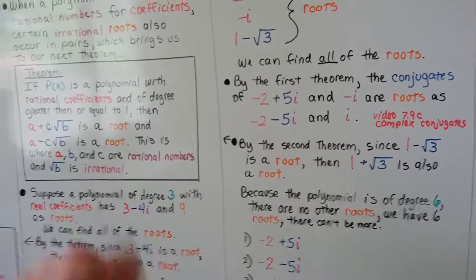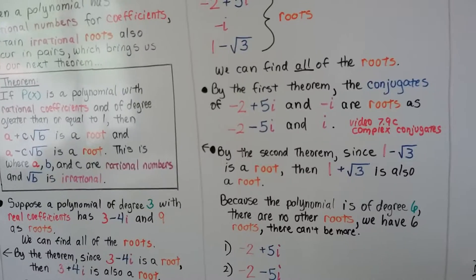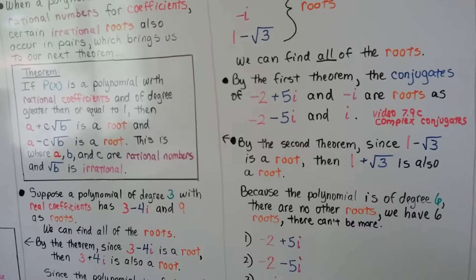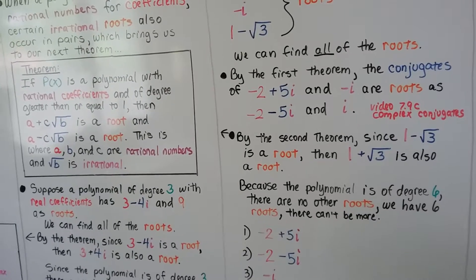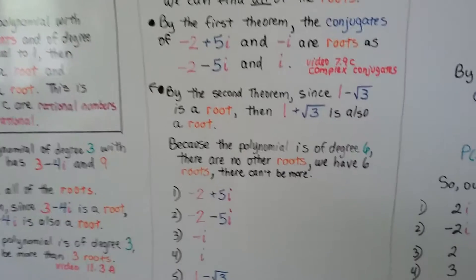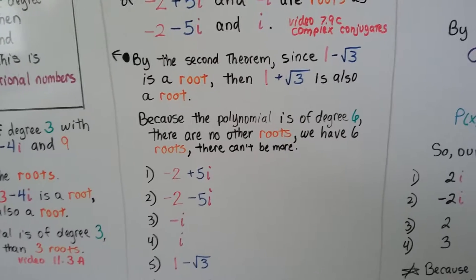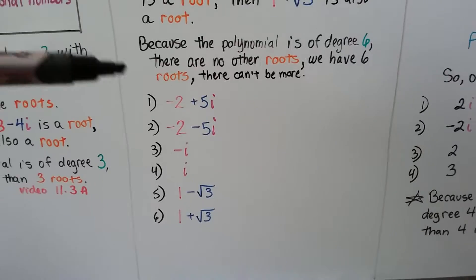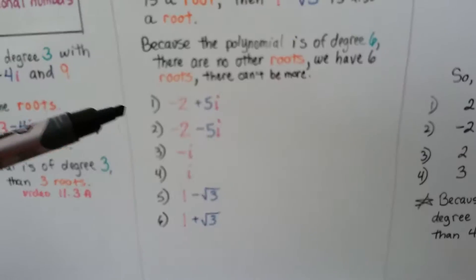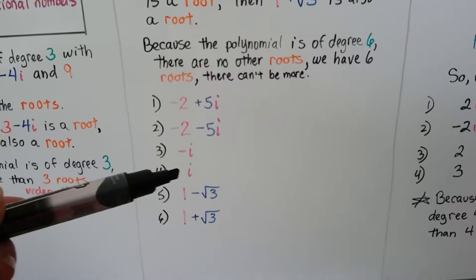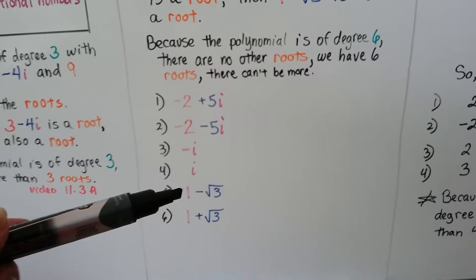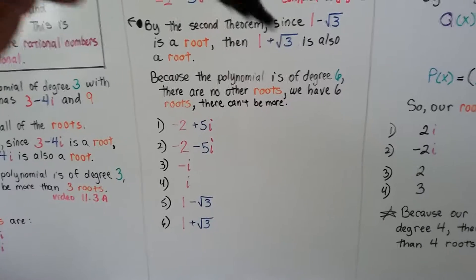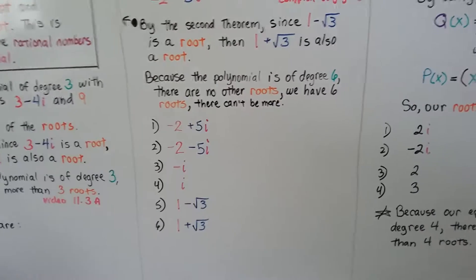Now by this second theorem, since 1 minus the square root of 3 is a root, then 1 plus the square root of 3 is also a root. And because the polynomial is of degree 6, there's no other roots. We have 6 roots. There can't be more. So here they are: negative 2 plus 5i, negative 2 minus 5i, negative i, i, 1 minus the square root of 3, and 1 plus the square root of 3. There's our 6. If it's of degree 6, it can't have more than 6.